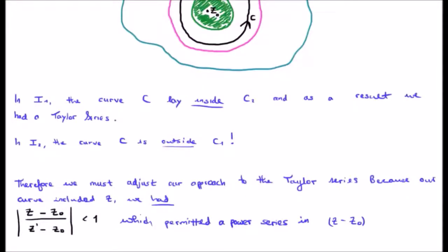Therefore, we have to adjust our approach because our curve included Z. When we had our curve which included Z, we had the following radius of convergence, which allowed us to power series expand in Z minus Z zero.